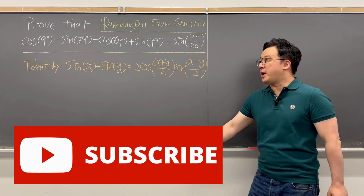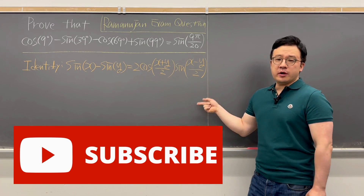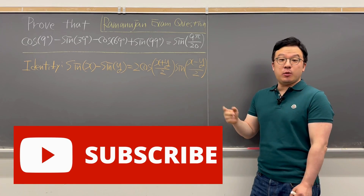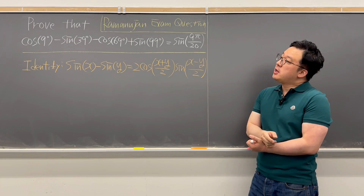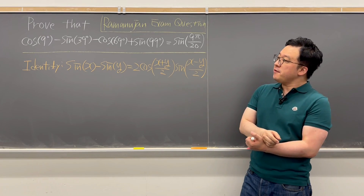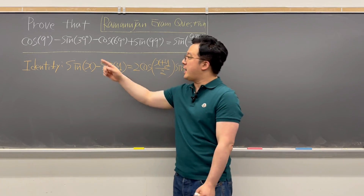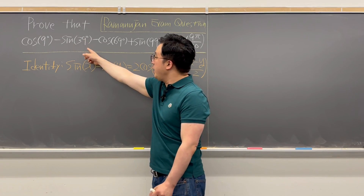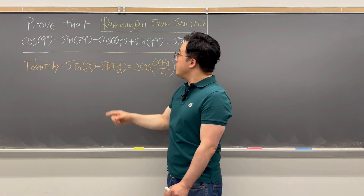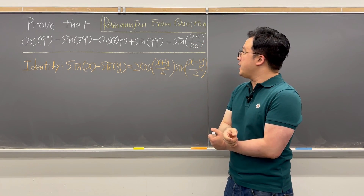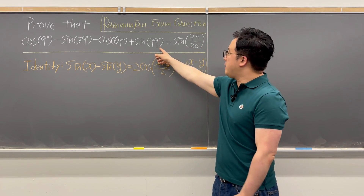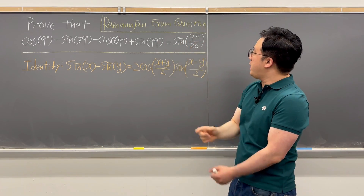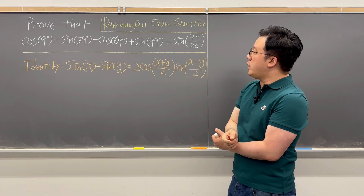Okay guys, welcome back. So this is one of the questions that Ramanujan actually solved for the exam when he was in college. The question is: prove that cosine 9° minus sine 39° minus cosine 69° plus sine 99° is equal to sine(9π/20).